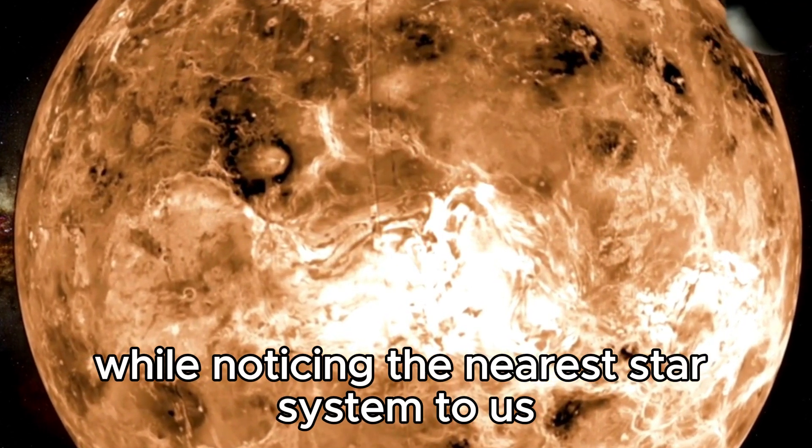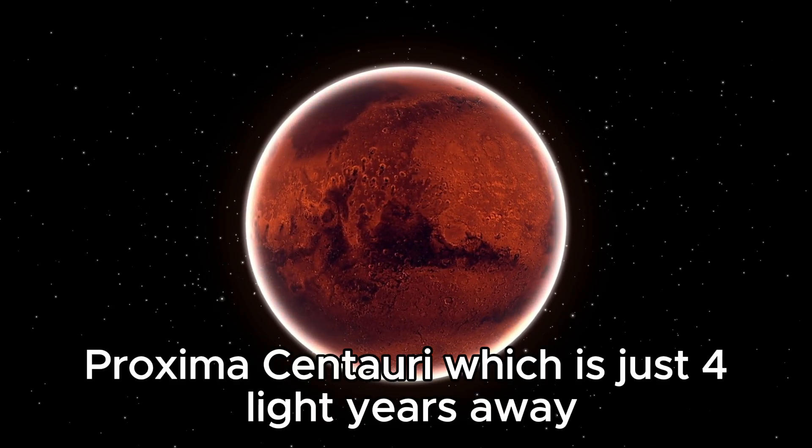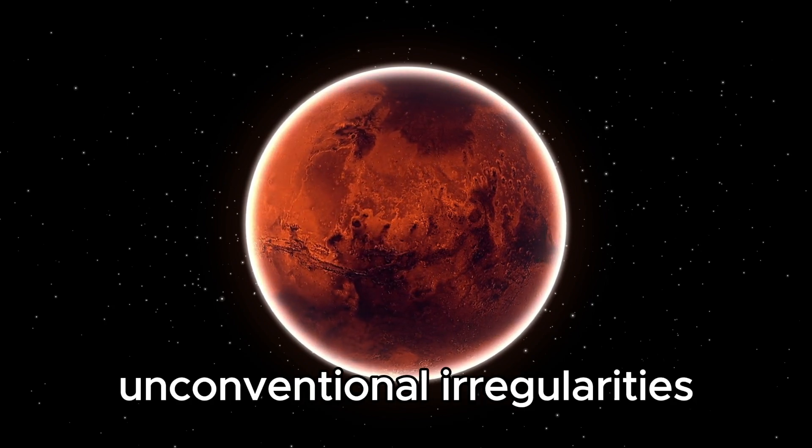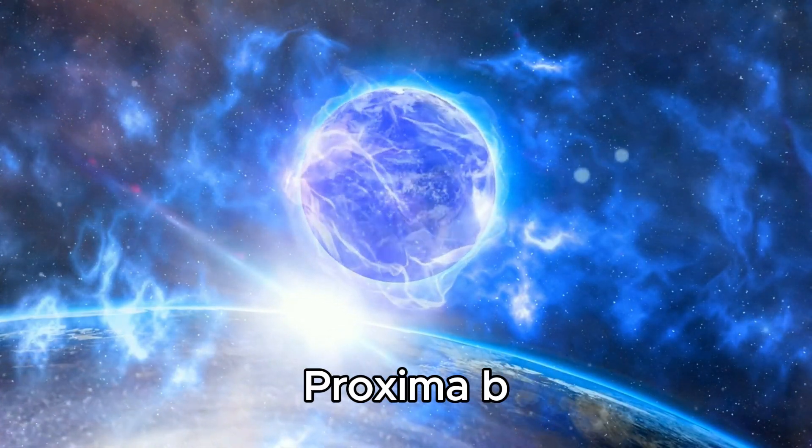While observing the nearest star system to us, Proxima Centauri, which is just four light years away, researchers have seen some unconventional irregularities from one of the planets in the system, Proxima b.